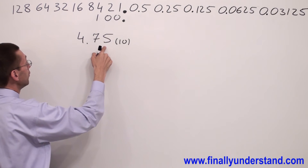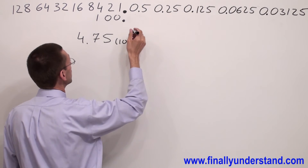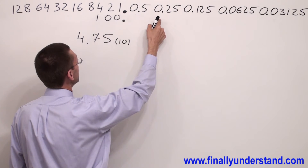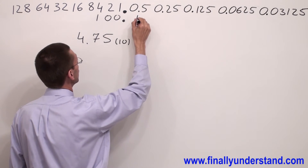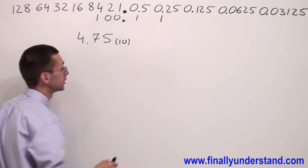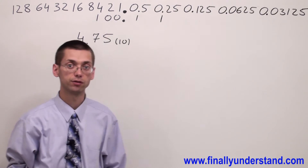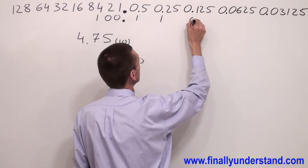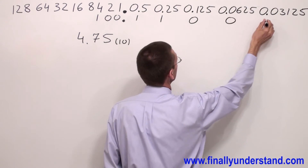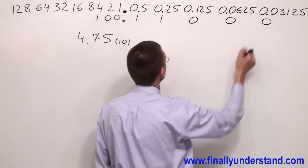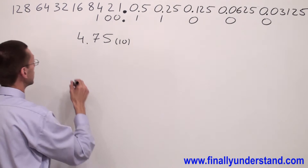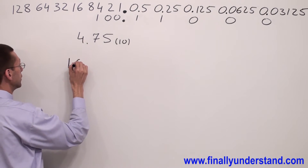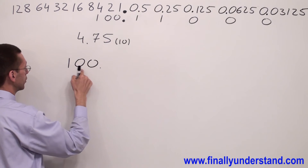0.75 — you can build from 0.5 and 0.25, so I write 1, 1. And we said we want to keep 5 bits after the binary point, so I'm going to fill up these spaces by 0s. Finally, I'm going to get the answer 1, 0, 0 — this is binary 4.